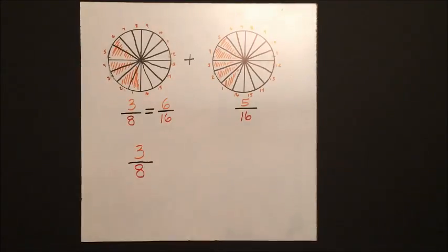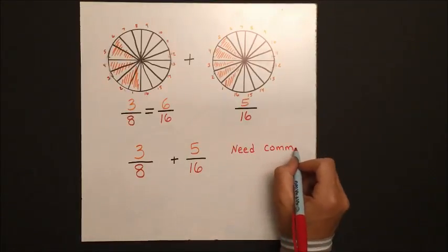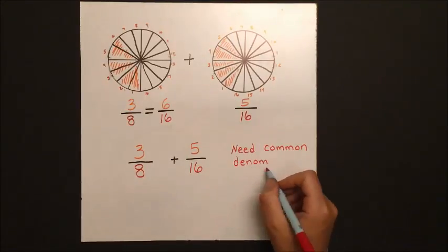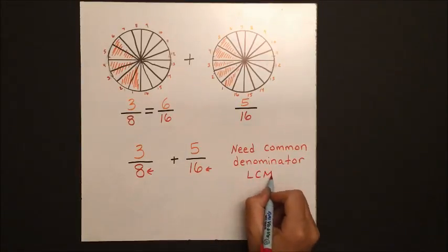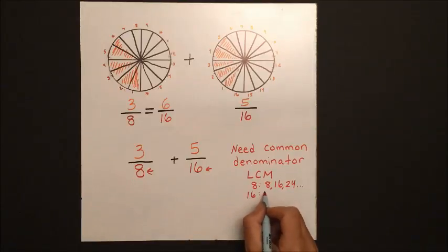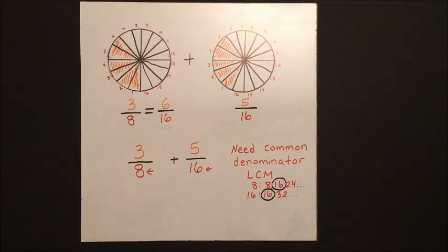So if we were to compare this just with numbers without looking at the diagram, we have to find a common denominator between 16 and 8. So we list out the multiples of both of those numbers until we find when that matches: 8, 16, 24... 16, 32, and so on. 16 is our common denominator.